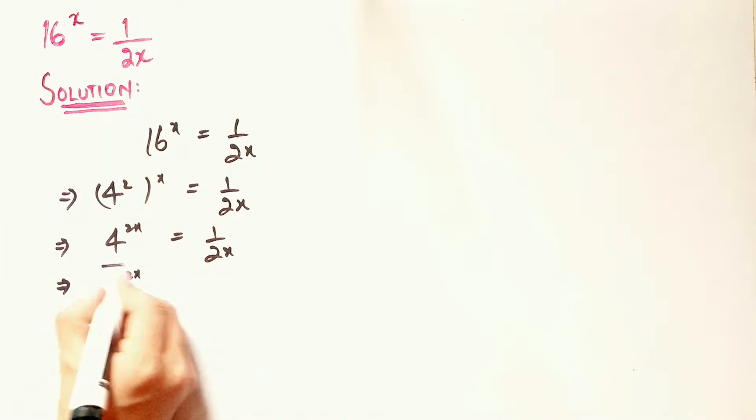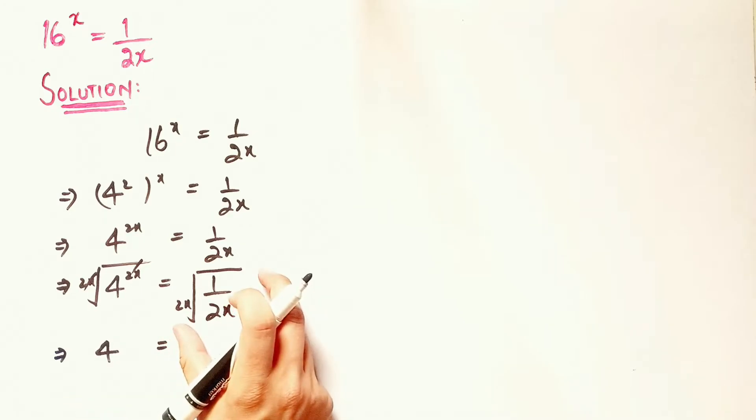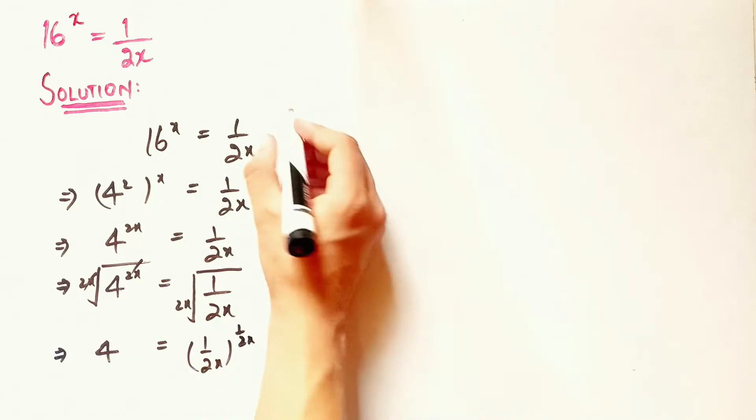So taking 2x root. Now simplifying, this will cancel out and we have only 4 on the left hand side. To the right, we will have 1 over 2x. If I write this 2x root as 1 over 2x, then it will be the same thing.